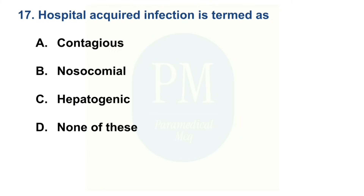Hospital-acquired infection is termed as: Option A: Contagious. Option B: Nosocomial. Option C: Hepatogenic. Option D: None of these. The correct option is Option B — Nosocomial.